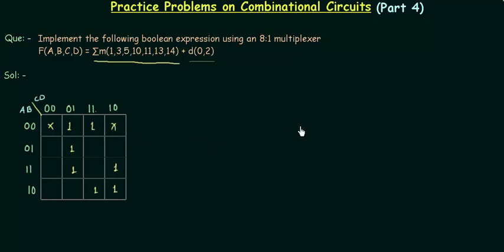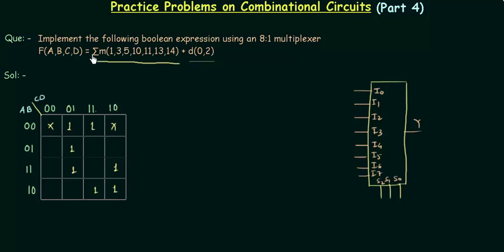Now we have to make an 8 is to 1 multiplexer. I will make an 8 is to 1 multiplexer here and the selector variables are 3 in this case. So these are my 3 selector variables: S0, S1, S2. The output is Y and there are 8 inputs: I0, I1, I2, I3, I4, I5, I6 and I7. Now the important part comes we have to assign these 4 variables as the input and also as the selector variable.